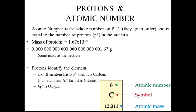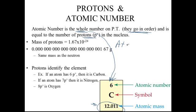Protons and the atomic number. The atomic number is a whole number on the periodic table. If you look at your periodic table, you'll see the atomic number, and you'll also see a fraction for most elements — that's the atomic mass — and those are two different things. The atomic number is a whole number, and that's how the periodic table is arranged. The atomic number always increases, and it is equal to the number of protons in the nucleus.